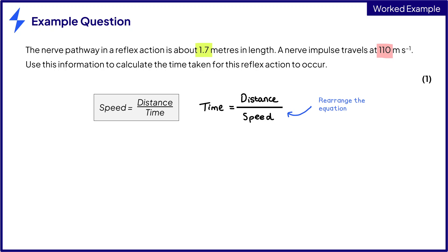Once we've done that, we can substitute in the numbers from the question into the equation to make 1.7 divided by 110, which gives us an answer of 0.015 seconds. Always make sure to include units in your answers to maths questions.